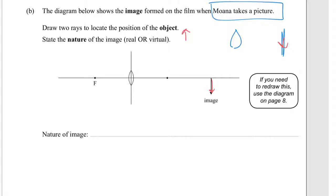So there's going to be a ray going from the top of the image through the focal point, but remember the arrow is in the opposite direction because we're going from the image to the object. Through the focal point.